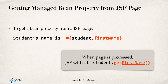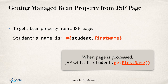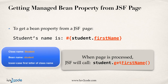We just saw an example of setting a bean property. How do you actually read or get a bean property in a JSF page? To get a property, you use the JSF expression language. For example, with output text saying 'Student's name is', you use the pound curly brace and say student.firstName. In the background, JSF will actually call student.getFirstName — calling the getter method on our Managed Bean when it processes the page.